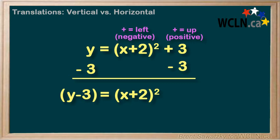we can see that the horizontal and the vertical translations are now perfectly consistent. When the numbers are both in with the variables like this, then we see that a positive number shifts in the negative direction, in both cases.